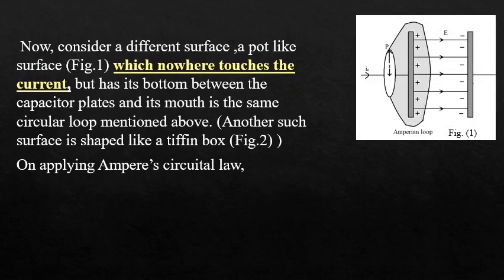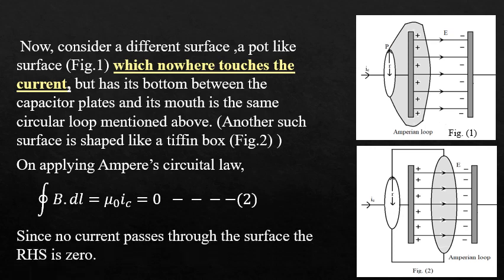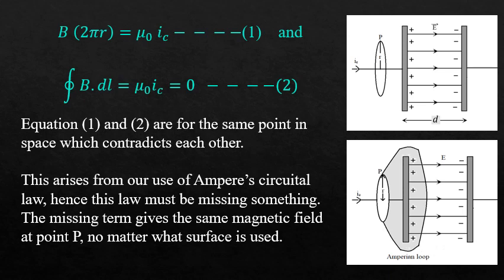Now consider a different surface — a pot-like surface which nowhere touches the current but has its bottom between the parallel plate capacitor. The mouth of the pot is the same circular loop from the previous diagram. Another such surface is the shape of a Tiffin box. On applying Ampere's Circuital Law, the line integral of B dot dL equals µ0 IC. Since the loop does not enclose any current, IC equals 0, making the right-hand side equal to 0. Equation 1 and equation 2 are for the same point in space yet contradict each other, showing Ampere's Circuital Law must be missing something.